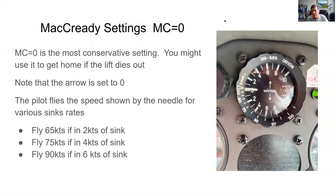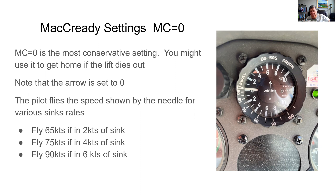So how does the McCready ring work? McCready zero is your most conservative setting — you might use that to get home late in the day when lift runs out and you want maximum distance coming back from cross country. In this illustration with the McCready ring set to zero: if the vario needle came down to minus two, you'd fly at 65 knots; four knots of sink, 75 knots; and six knots of sink, about 85 knots.